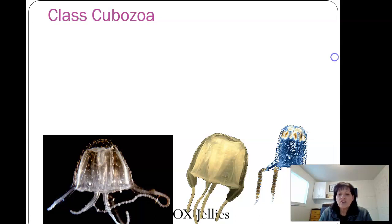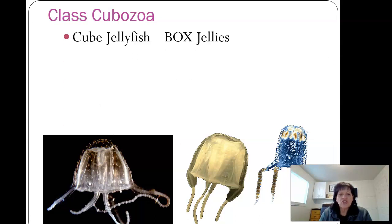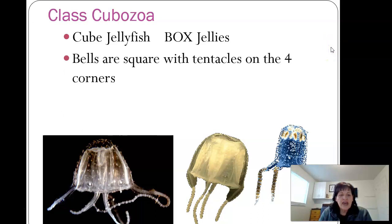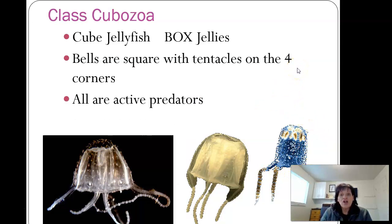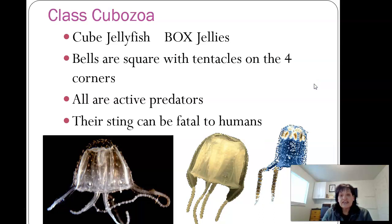Class Cubozoa — these are the box jellies, or cube jellyfish. Their bells are square with tentacles on the four corners. You can see it's more squared, and then each of those four corners has tentacles coming off them. Here's a great one — this blue one where you can really see the four tentacles. All are active predators, always out there searching for food and prey. Their sting can be fatal to humans.